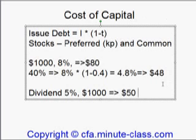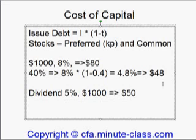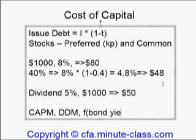Now, how about the common stock? For common stock, it's more complicated and more difficult to evaluate. So there are several methods to evaluate it, including the capital asset pricing model, the dividend discount model, or we can even relate it to the bond yield. I will discuss these concepts in the next lecture. The cost of the common stock, or common equity, can be represented as Kc.